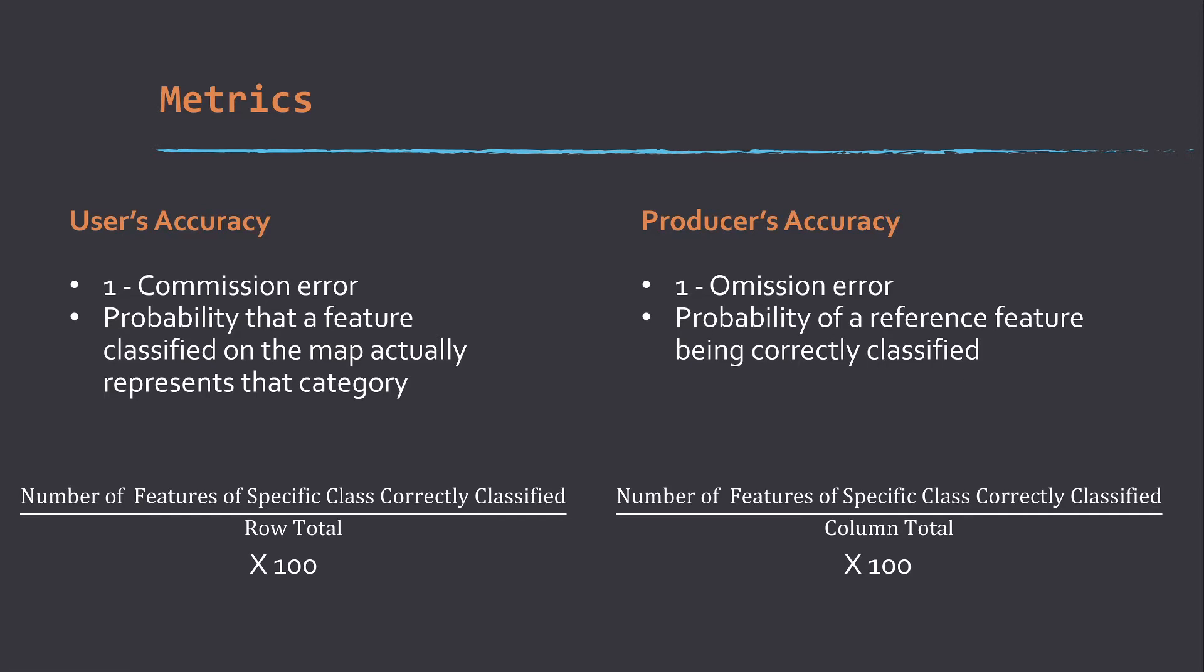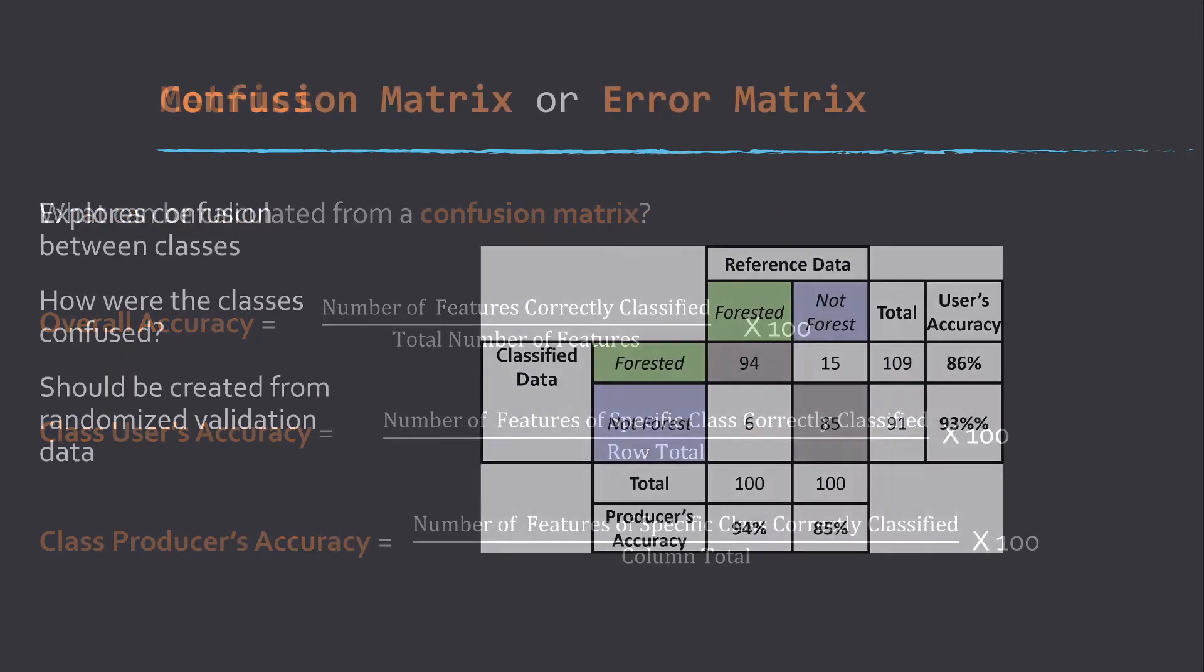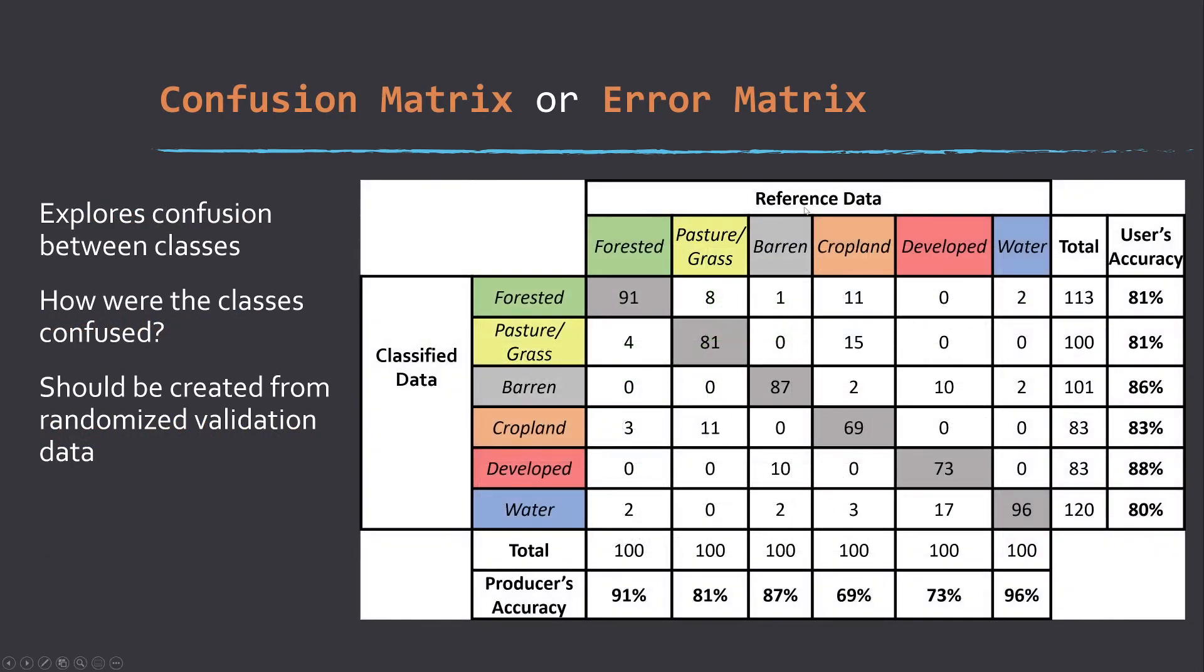These are calculated by either comparison down the row or across the column. In this table, the producer's accuracies are calculated here at the bottom of each column, and the user's accuracies are calculated across the row.